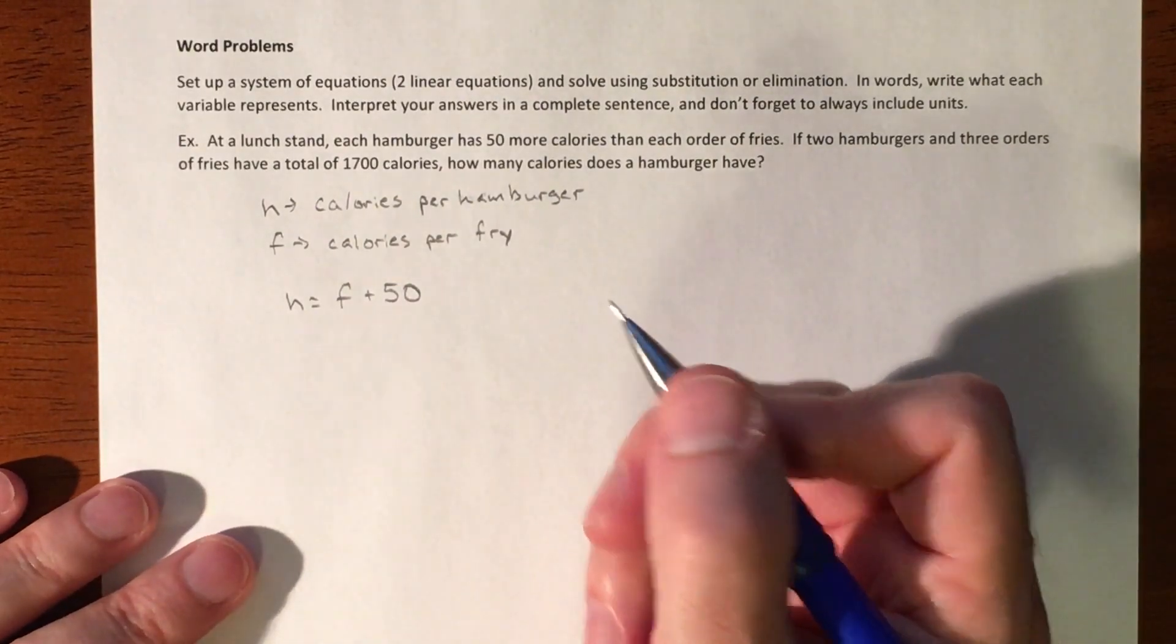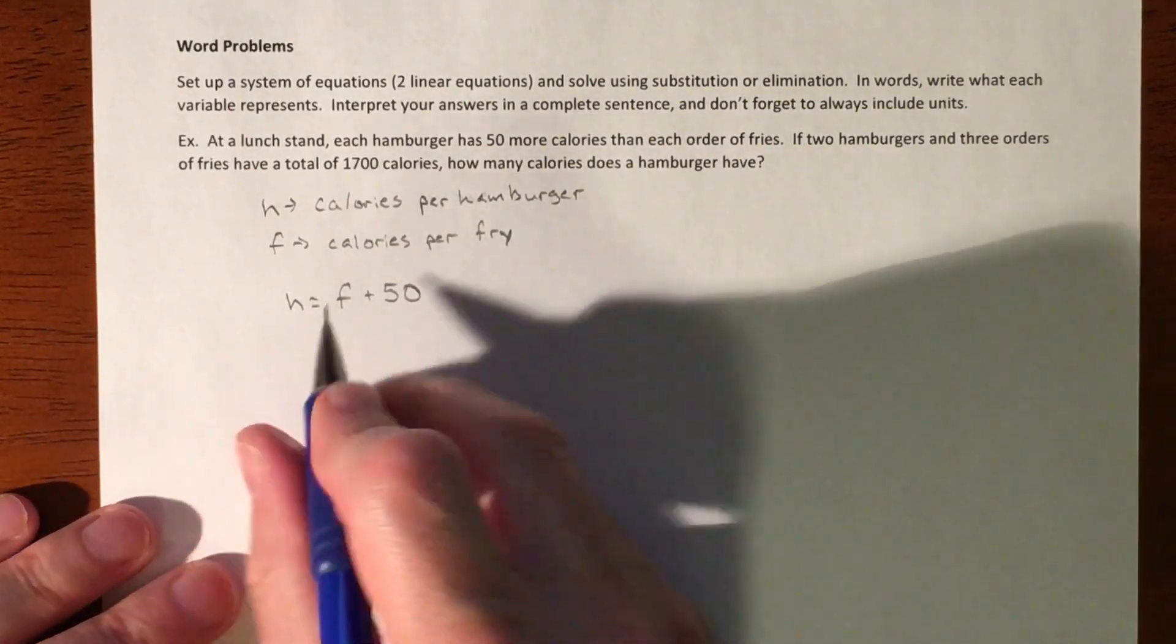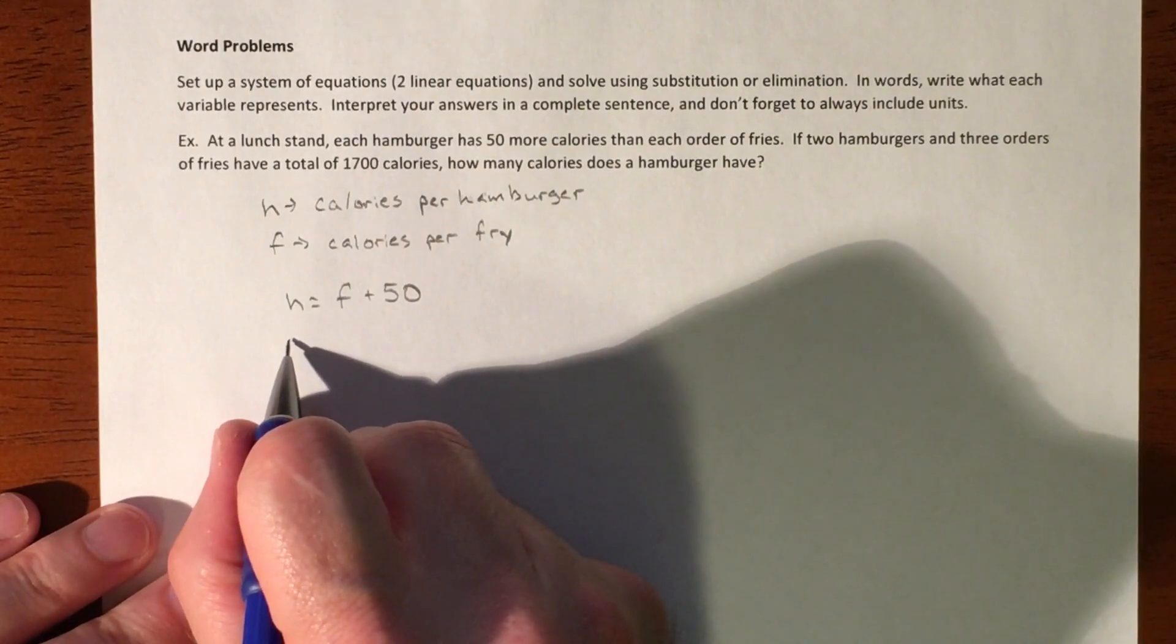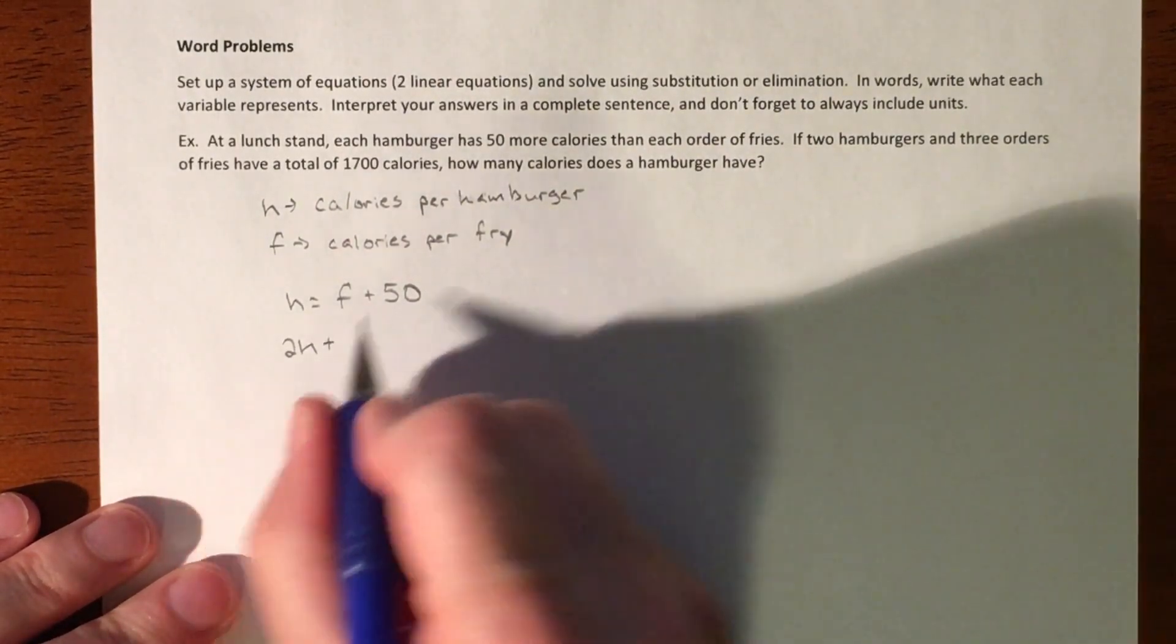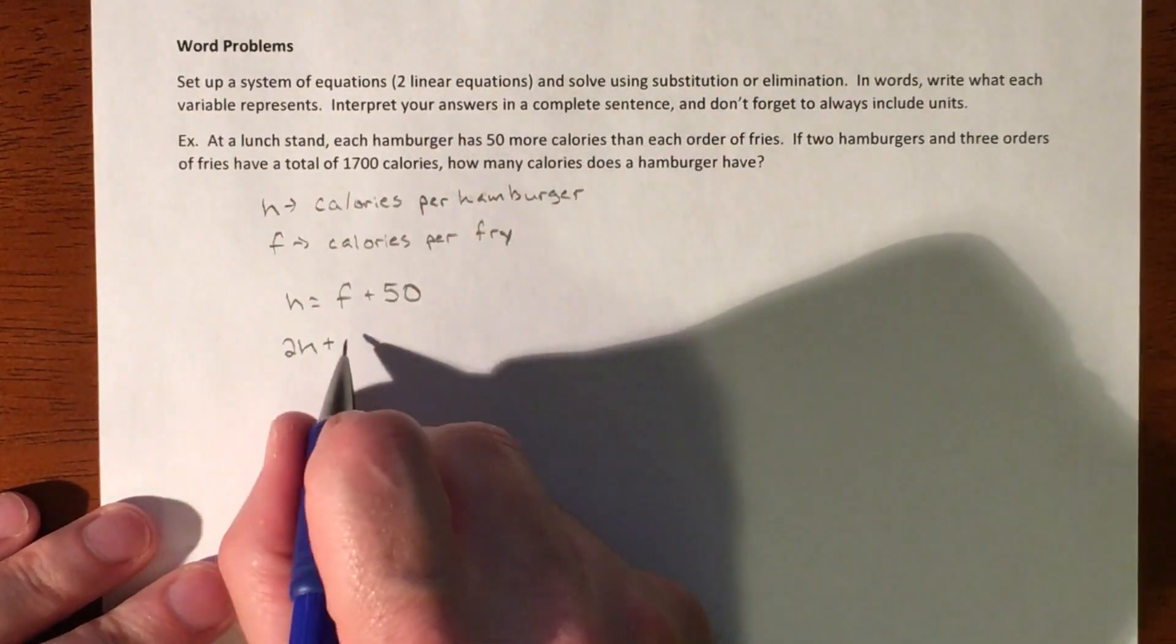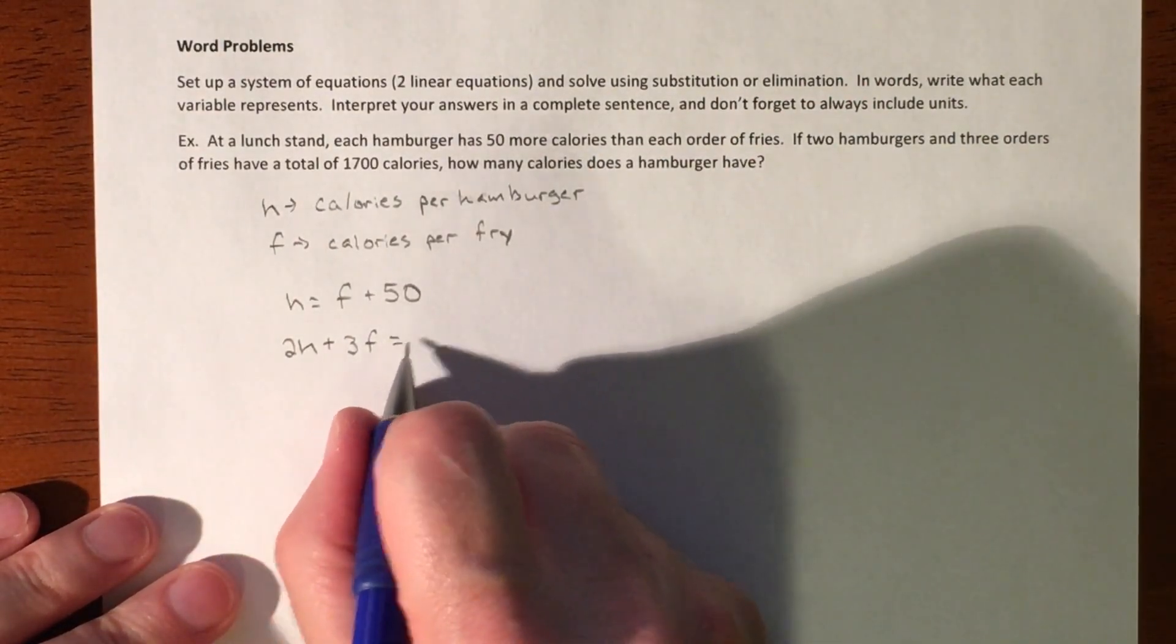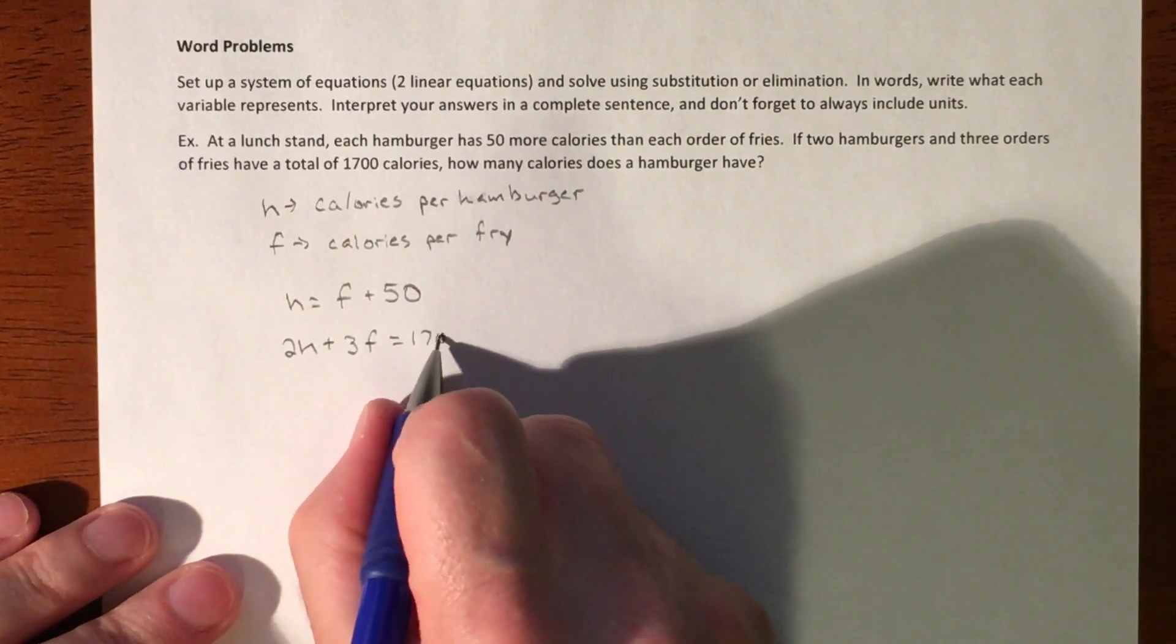All right, and then our next setup is going to be our two hamburgers. Two hamburgers plus three french fries have a total calories of 1,700.